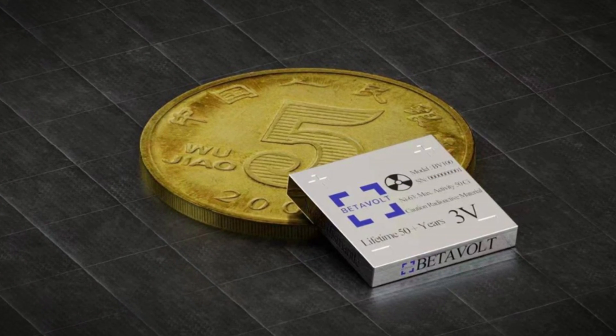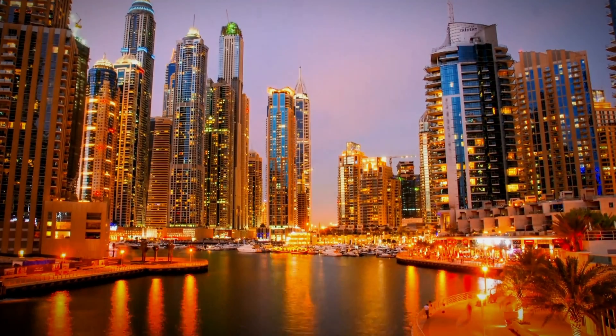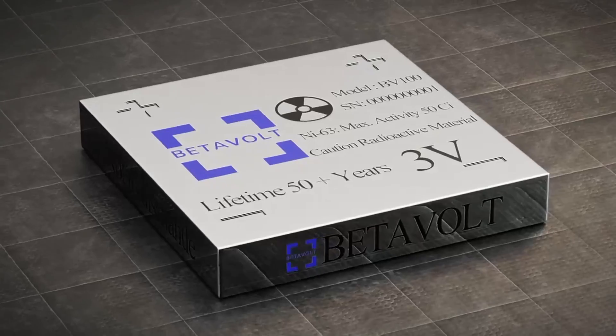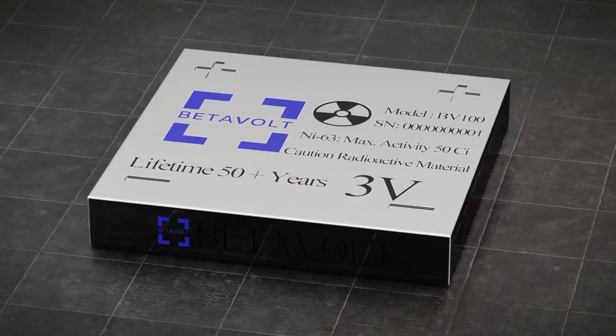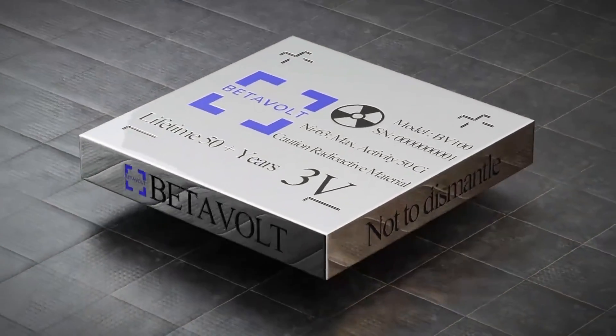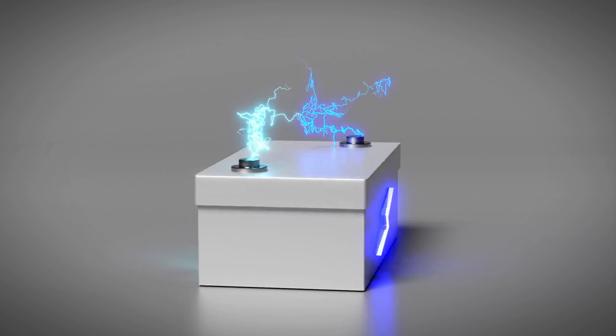Betavolt is a Chinese startup that claims to have developed a breakthrough nuclear battery that can last for 50 years without charging or maintenance. It's the first battery that can deliver 100 microwatts of power and a voltage of 3V while measuring 15x15x5 cubic millimeters. However, it plans to produce a battery with one watt of power by 2025.